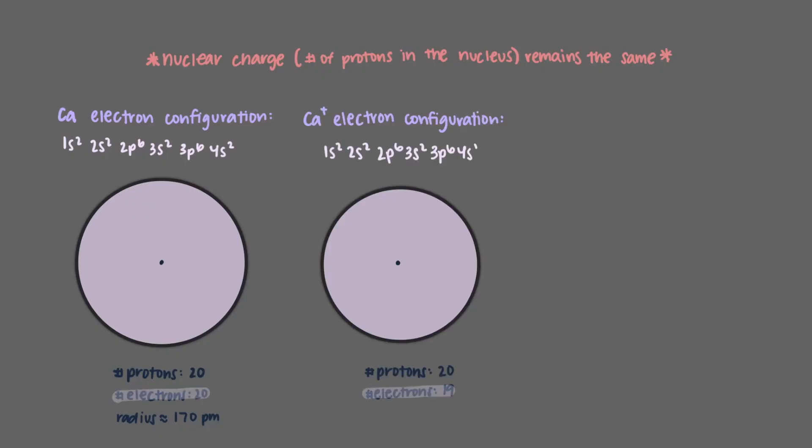So when an electron is removed from the atom, the remaining electrons, in this case still a 4s electron, will feel the positive nuclear charge more strongly. This then causes the electron cloud to condense, making the atomic radius of the cation smaller than that of a neutral atom.